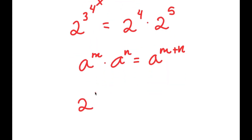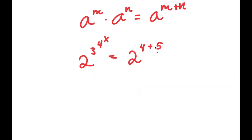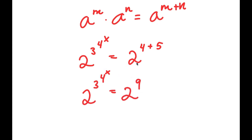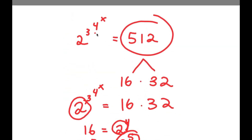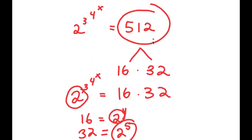So right here we have 2 to the power of 3 to the power of 4 to the power of x is equal to 2 to the power of 4 times 2 to the power of 5, which is the same thing as 2 to the power of 4 plus 5. And 4 plus 5 is equal to 9. So 2 to the power of 3 to the power of 4 to the power of x is equal to 2 to the power of 9.